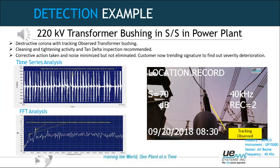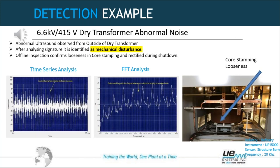Moving to dry type transformers: a 6.6 kV and 415 V dry type transformer was having abnormal noise. Looking at the FFT analysis, we found an absence of electrical activity between harmonics. In the time series, triangles were present, indicating mechanical looseness of the core stamping, which was rectified during the shutdown.